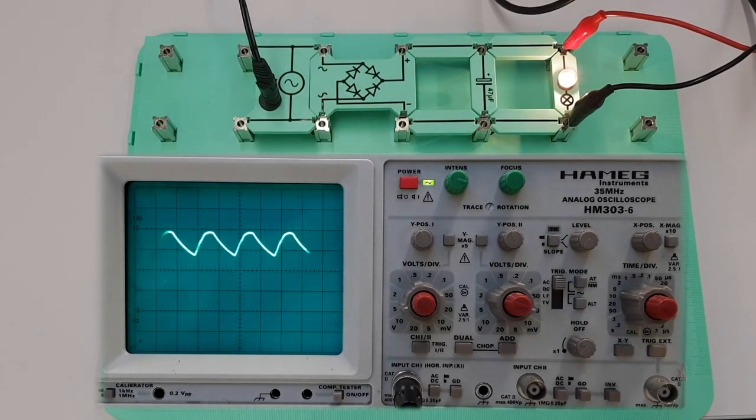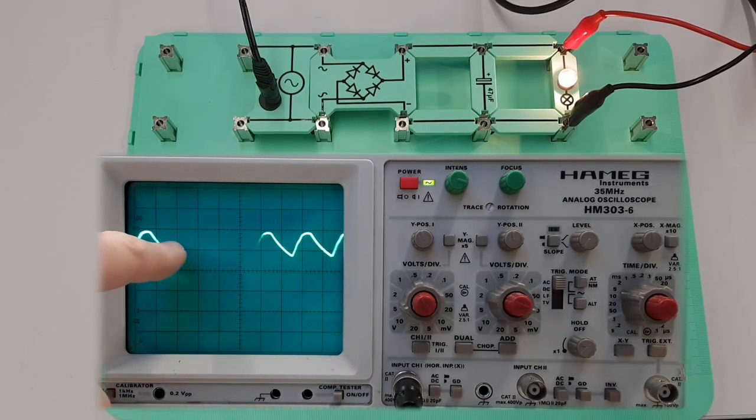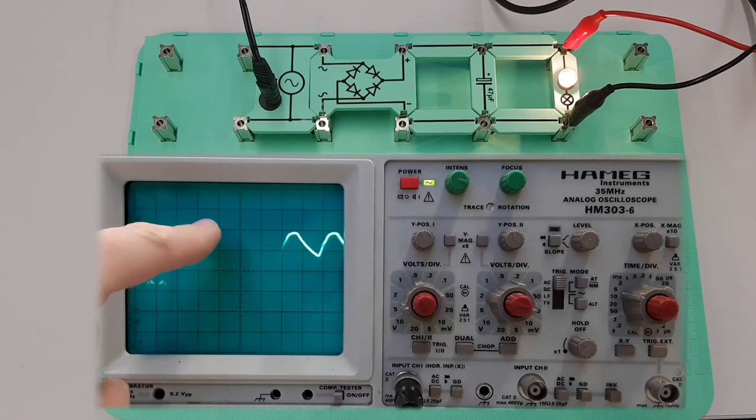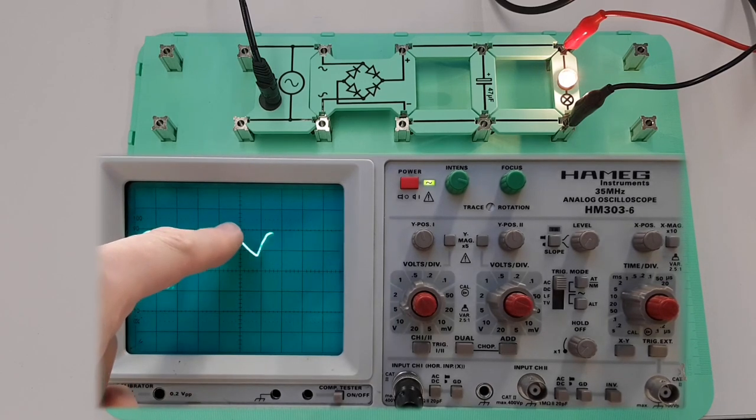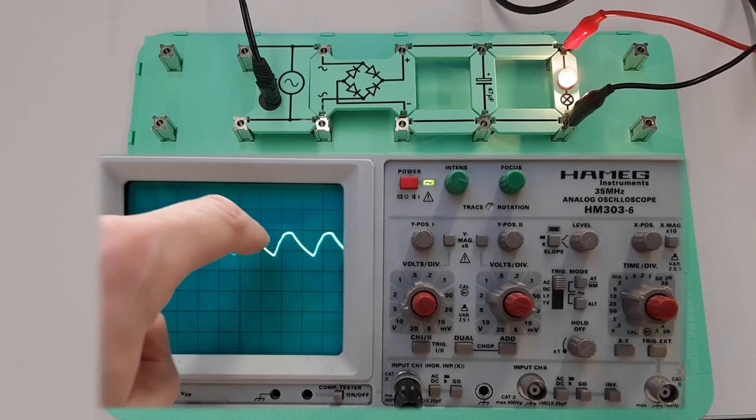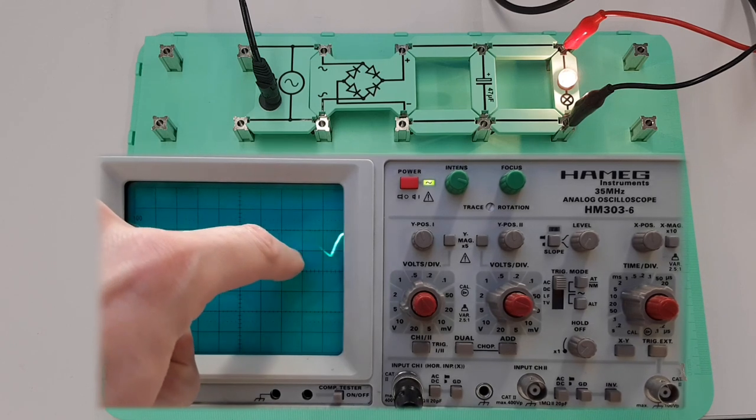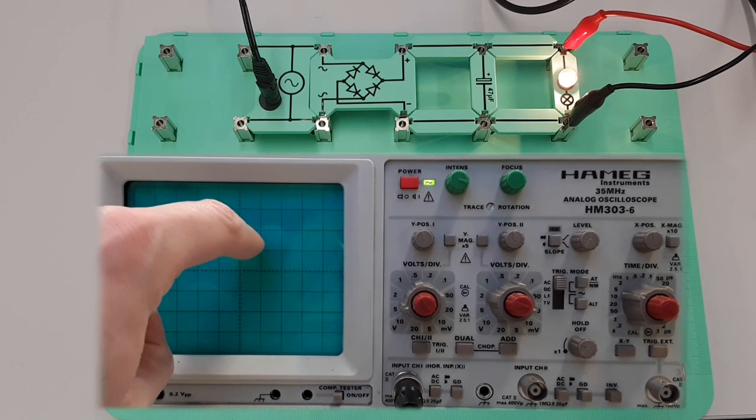So look at the change there now. What happens is that during this part of the cycle, the capacitor is charging up, and then as the current starts to drop away from the input, the current will discharge from the capacitor and it will discharge quite slowly.